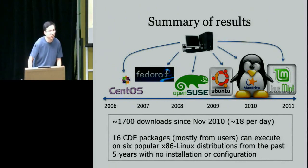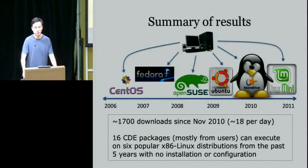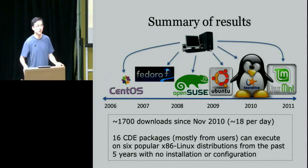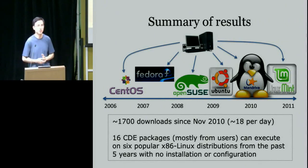A question was raised about trying CDE with musl libc rather than just glibc. It hasn't been tried with musl libc, but that shouldn't be any issue because nothing special is done with libc — it's just a file included in the package. You can imagine binaries that don't use libc and link something else, or static binaries, and that shouldn't be an issue.